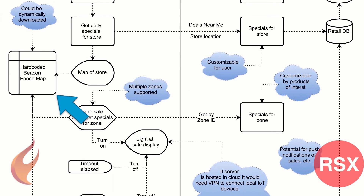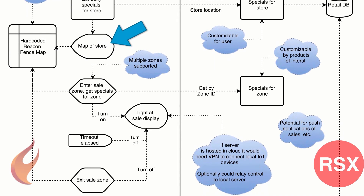While using the application, it has a beacon fence map embedded in it. In this case we're using a hard-coded map, but that map could easily be downloaded when the user connects to include updates reflecting changes in the store, or if the user is visiting a store they've never visited before that was perhaps created after the app was released. That can be downloaded dynamically. So the user can use this as a map of the store to help them find things, navigate the store, and find the products they're looking for.